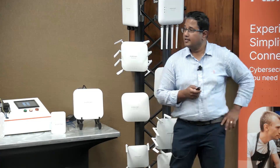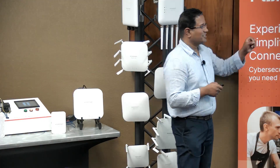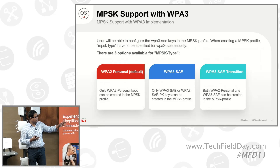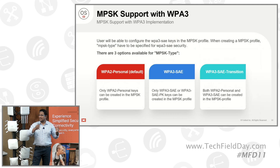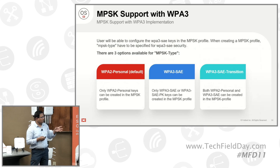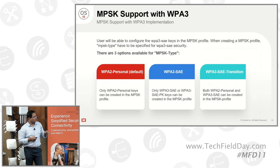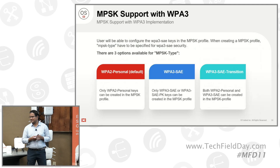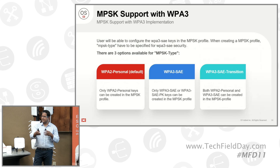The feature is described, but how does it actually work at the frame level? On the SSID there is an additional flag called MPSK type, which gives all three options: WPA2 Personal, SAE, and SAE transition. For the frame-level details, those weren't covered in the slides. Notably, this is a patentable idea currently in process — Fortinet is the first in the industry with this solution, as no such requirement or solution existed in the current market.